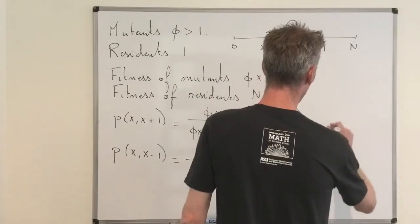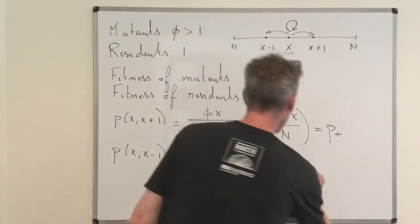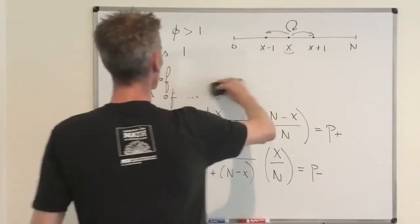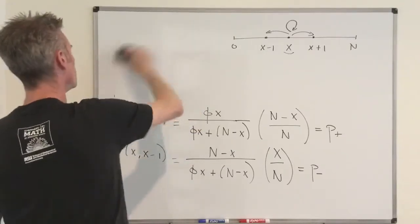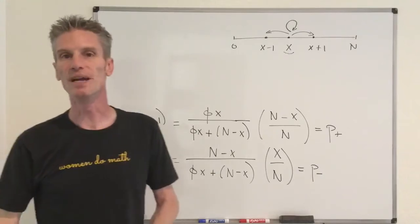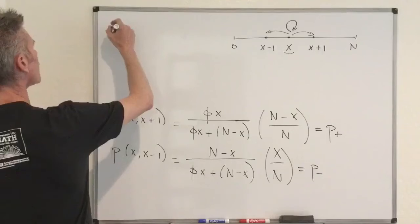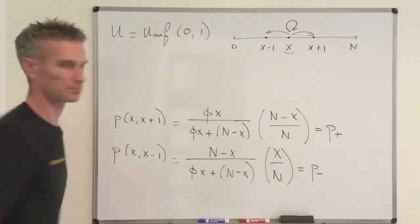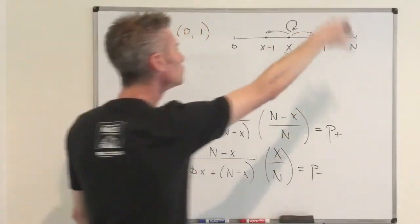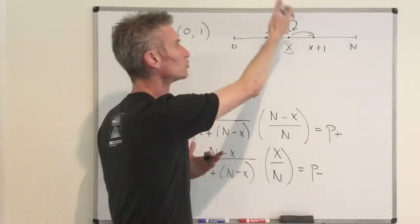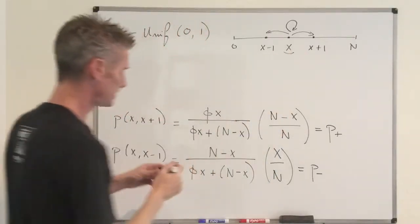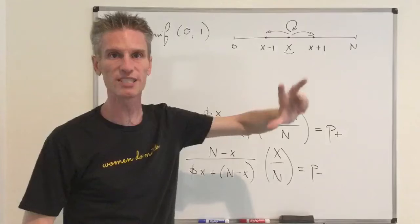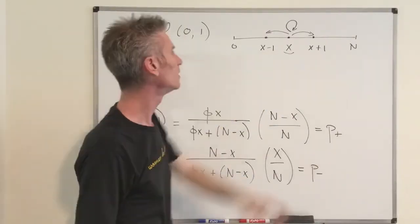To simulate the process, call P_plus the probability of adding one mutant and P_minus the probability of removing one mutant. We can generate the process using uniform random variables — uniform is basically the only thing basic languages like C can do. At each time step, take a uniform random variable in the interval [0,1]. Split the interval into three sub-intervals whose lengths correspond to P_plus, P_minus, and the probability of staying at X.